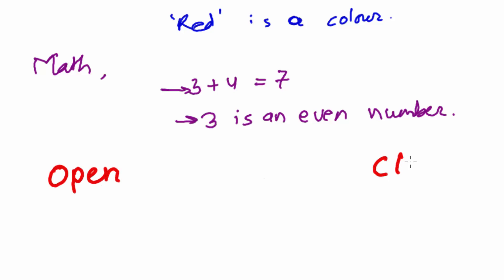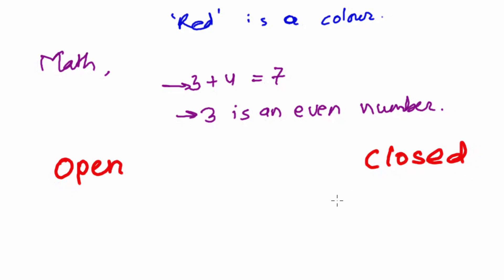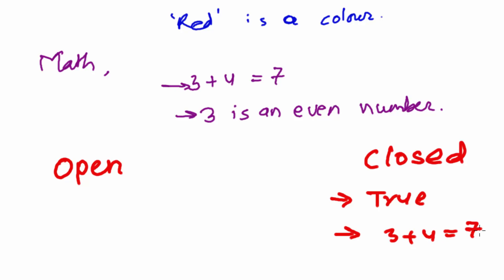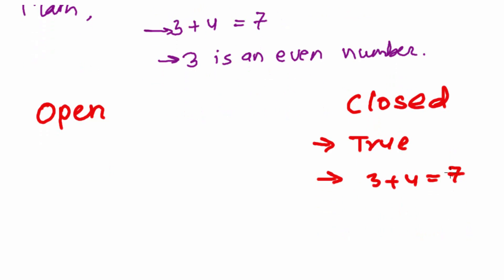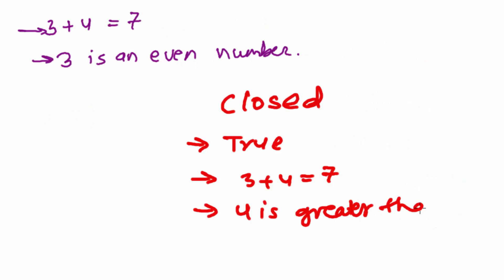Now let's understand open and closed sentences — it's not hard, very simple. In algebra, closed sentences are always true. For example, 'three plus four equals seven' is a true mathematical sentence, so it's a closed sentence. Similarly, 'four is greater than three' is also correct and true, so these true sentences are closed sentences.